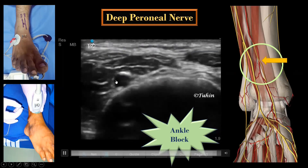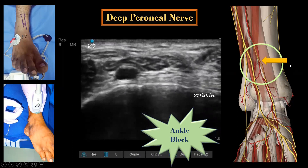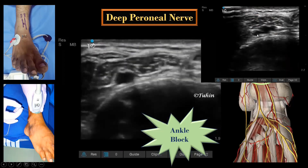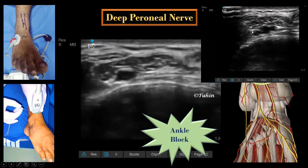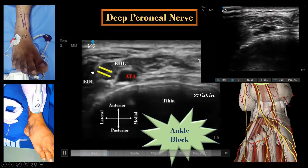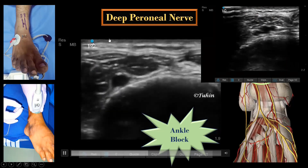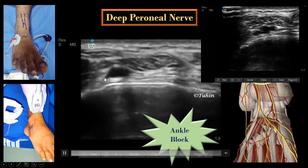The venae comitantes of the anterior TBL artery may not be visible due to pressure over the probe; releasing pressure will reveal the artery with its venae comitantes. To block the deep peroneal nerve, the needle is inserted from lateral to medial in in-plane technique, or from anterior to posterior in out-of-plane technique, and the drug is deposited next to the anterior TBL artery.